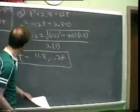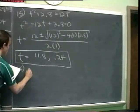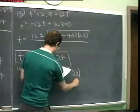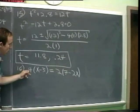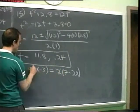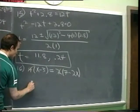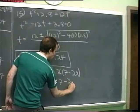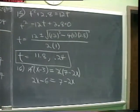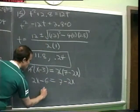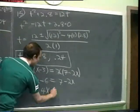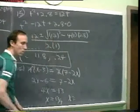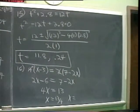Number 16 says solve for x, given 4 times (x minus 3) equals 2 times (7 minus 2x). I've got a common factor of 2, so divide both sides by 2, making this a 2. Multiply out the left: 2x minus 6 equals 7 minus 2x. Add 2x to both sides getting 4x, add 6 to both sides getting 13. So x equals 13 fourths, which is 3.25.